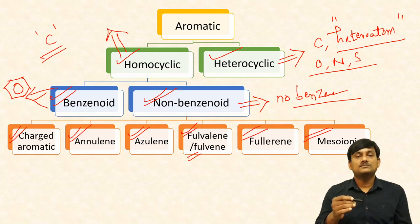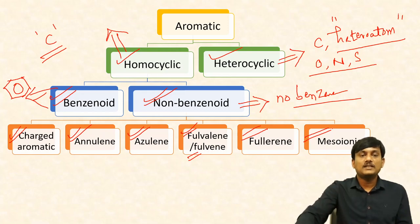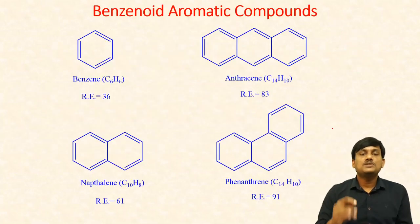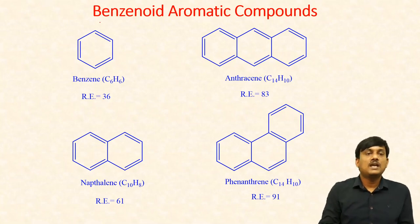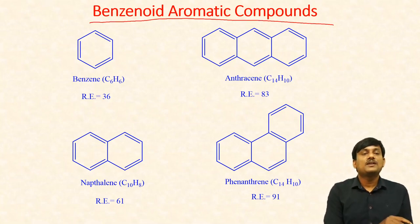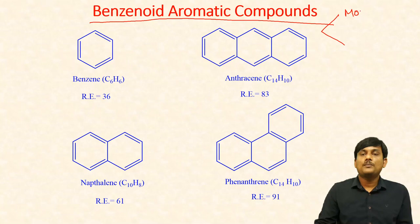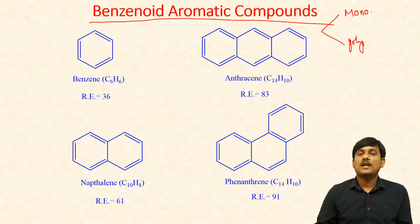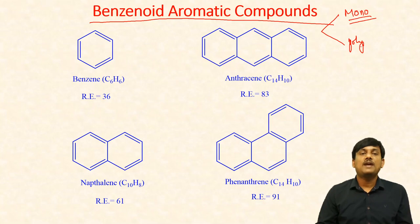In this lesson, I will explain benzenoid aromatic compounds. We know that in benzenoid aromatic compounds, we have at least one benzene ring. Benzenoid aromatic compounds are classified into monocyclic and polycyclic. In monocyclic aromatic hydrocarbons, you can find only a single benzene ring. In polycyclic aromatic hydrocarbons, you can find two or more than two benzene rings.